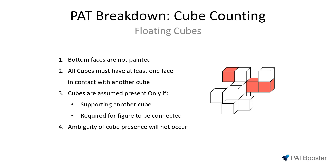In short, rule number three has not been violated, and rule number four is also easy — it hasn't been violated since there are no cases of ambiguity present. So now that I've proven that floating cubes align with the rules introduced in the first video, it's time to briefly mention why these floating cubes have started to make an appearance on the DAT.